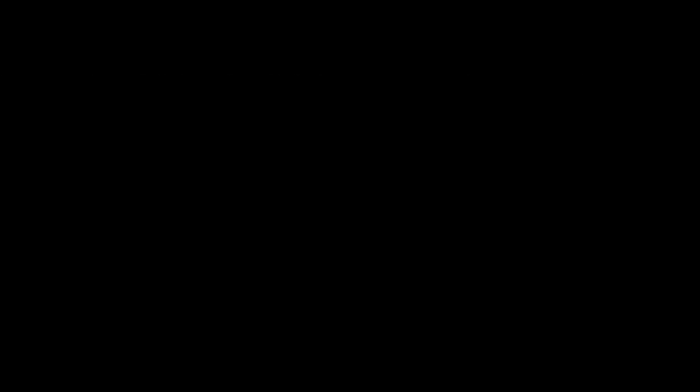Question 60. What are the output watts of a 5hp motor? Three-phase 480-volt, efficiency 75% and power factor of 70%. Answer: 3.75kW. Motor hp-to-kW ratio: one hp motor produces 0.75kW. A 5hp motor produces 3.75kW.